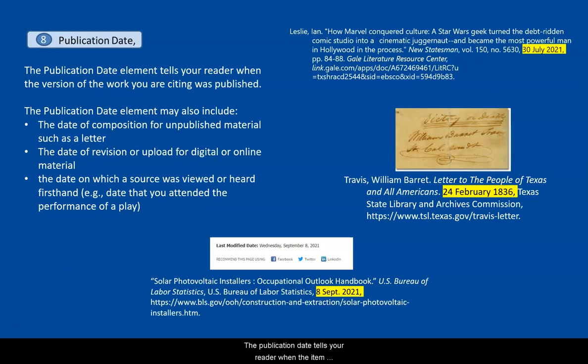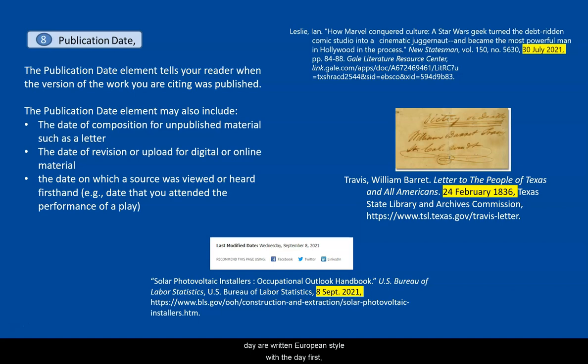The publication date tells your reader when the item was published or last updated. Publication dates, if they include the month and day, are written European style — with the day first, followed by the month spelled out, and then the year, followed by a comma. If there is just the year available, put just the year and follow it with a comma. Publication dates are written in regular font.